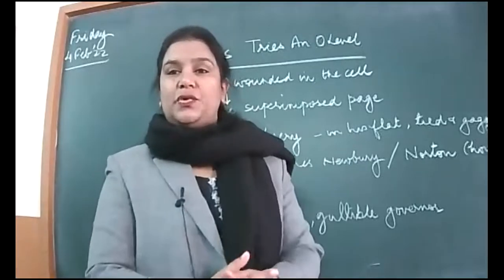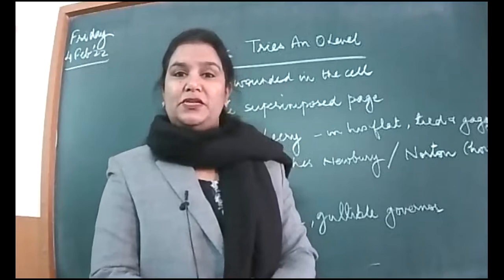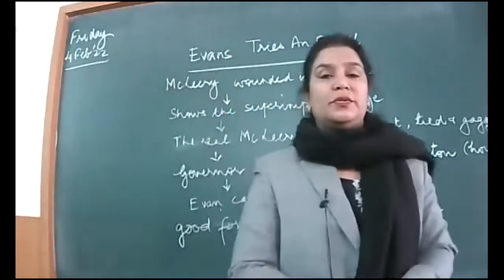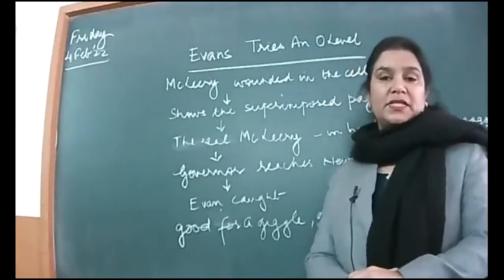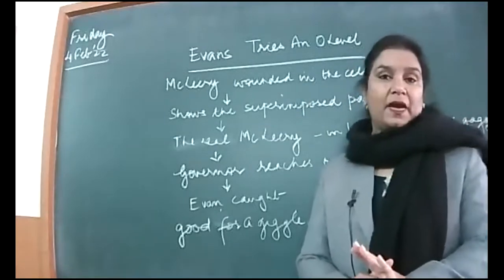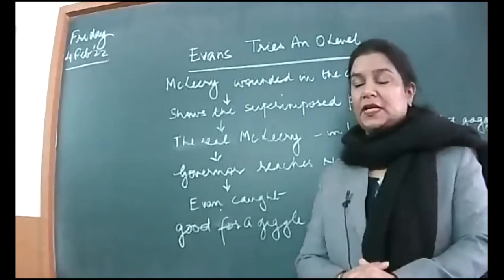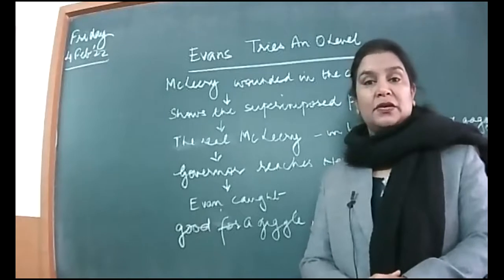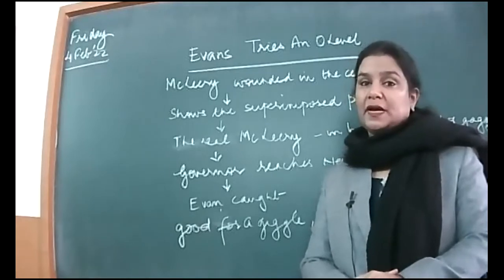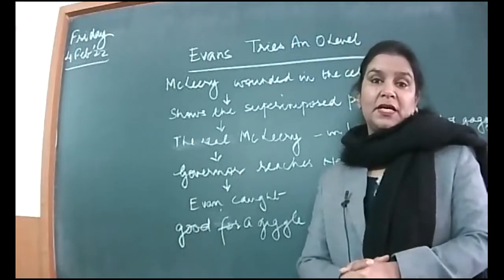Good morning students of class 12B. Today let's hope we're going to finish with the chapter 'Evans Tries an O Level'. We're almost towards the end of it. Yesterday we discussed that Evans is very clever and he's managed to escape even under high security arrangements, which means there are some loopholes he was able to find and some lapses on the part of the authorities.